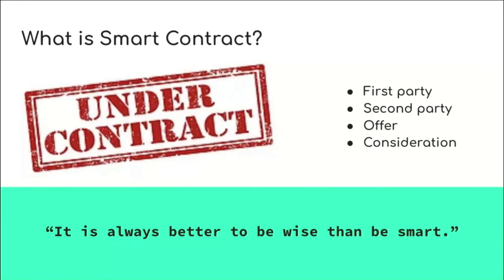I don't have to wait for you to send me the Ethereum and then send you the ticket, and you don't have to wait for me to send you the ticket before sending me the one ETH. When we sign this contract, it is going to execute automatically at the same time. So this is basically the very simple way of understanding what a smart contract is. A smart contract is actually not that smart or wise in deciding anything — it just does whatever you have told it to do.